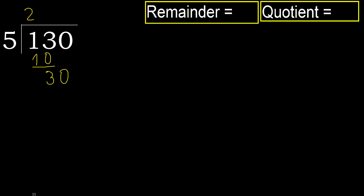13 minus 10 is 3. Next: bring down 0, giving 30. 5 multiplied by 6 is 30 — 30 is not greater.